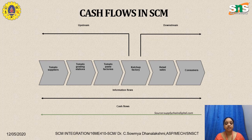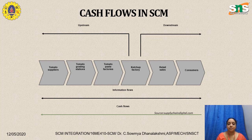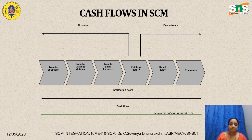Here is a case study on tomato suppliers — in a ketchup factory, how the cash flows are incorporated. In a ketchup factory, tomato suppliers are the first stage in the supply chain network. From the tomato suppliers, the tomatoes will be fed into tomato grading stations so that the best quality tomatoes can be selected to make ketchup.